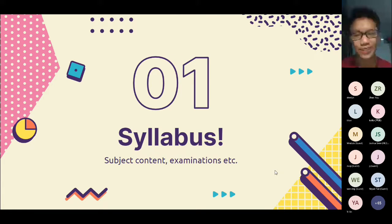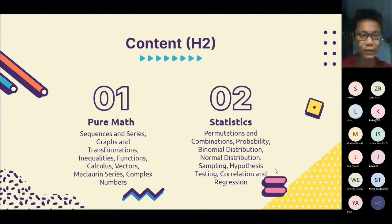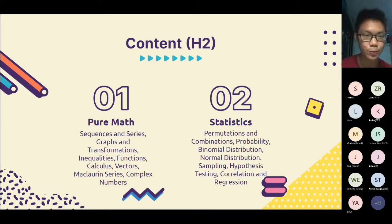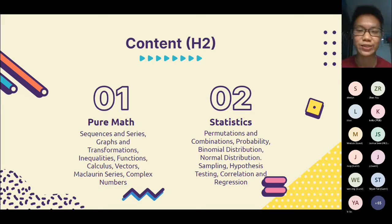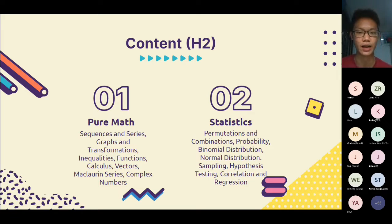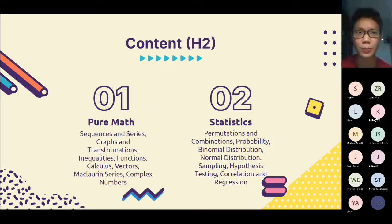H2 Math is composed of two broad sections: Pure Math and Statistics. In Pure Math, depending on how your school counts it, there are roughly 10 chapters — sequences and series, graphs and transformations, inequalities, complex numbers, and so on. A lot of what you learn here has a direct relation to secondary school, just with more developed concepts. Statistics is largely new — apart from probability, much of JC statistics will initially be unfamiliar, but not to worry — statistics is not that bad.